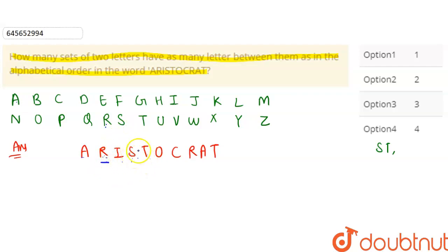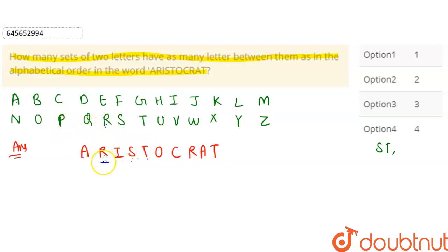Then R and T — between R and T, how many letters: there are some here, check R and T — so this case is also not possible. Then check R and O — between R and O here: one, two, three — three letters here in the word; between R and O in the word only two letters, so this is not possible. Then R and S — one, two, three, four, but here there are more.